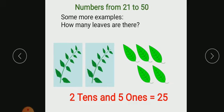That means you have 2 tens and 5 ones. Count them: 1, 2, 3, 4, 5. And it becomes 25.